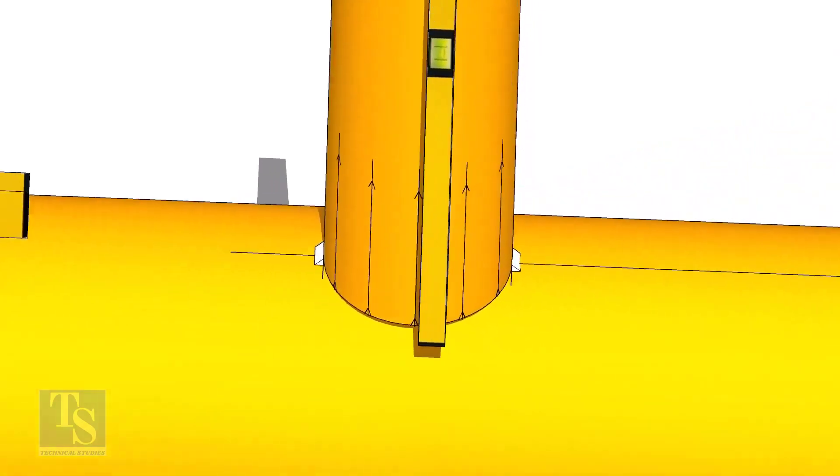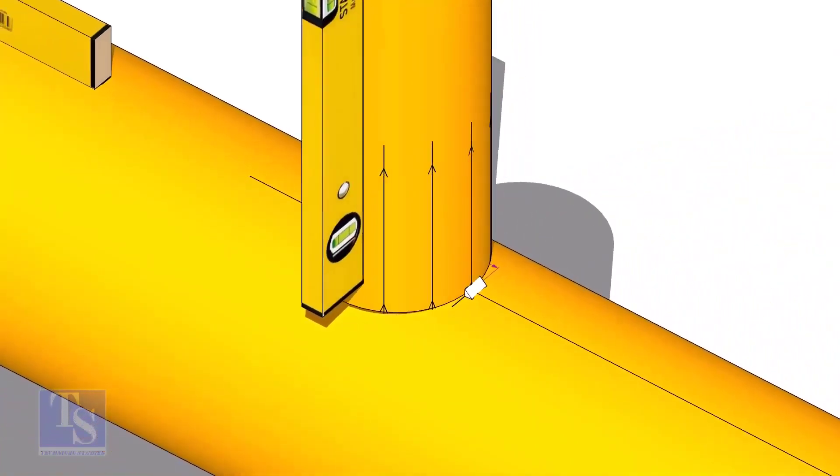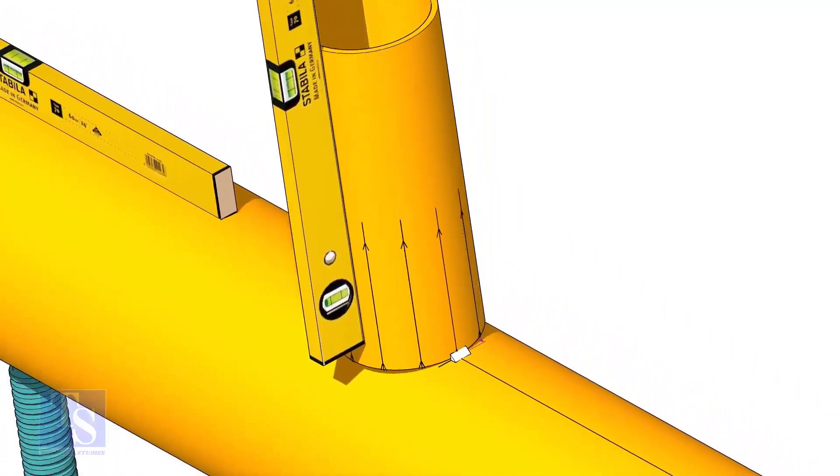Now make sure the pipe header and the branch are horizontally and vertically level. If required, strengthen the tack weld.